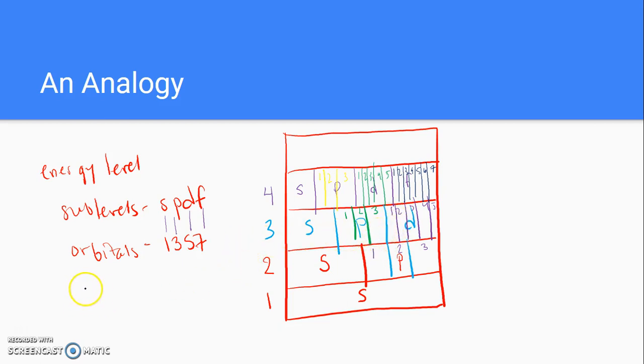Keep in mind that we said earlier that each orbital can have two electrons. Just two, mind you. So in this, two electrons can live here. One, two. Two electrons can live in this one. Two electrons can live in each bedroom.